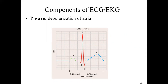The P wave is the first and smallest wave on an EKG. It represents the first action potential — specifically, it is representative of what's taking place in the atria. Since the SA node is inside the right atrium, that's where depolarization begins, so the P wave represents depolarization of both the right and left atria.